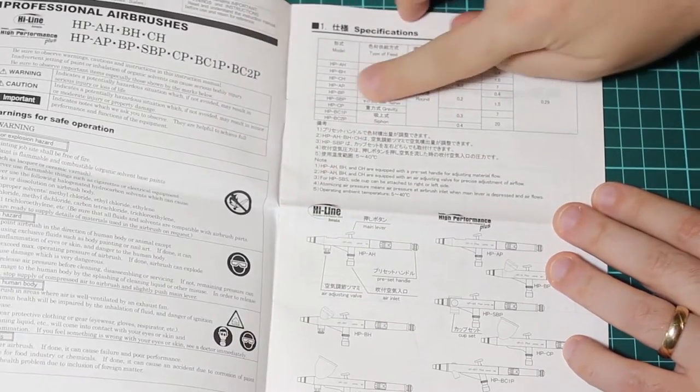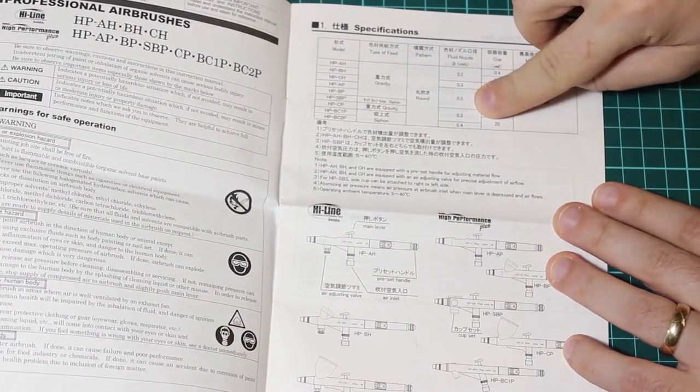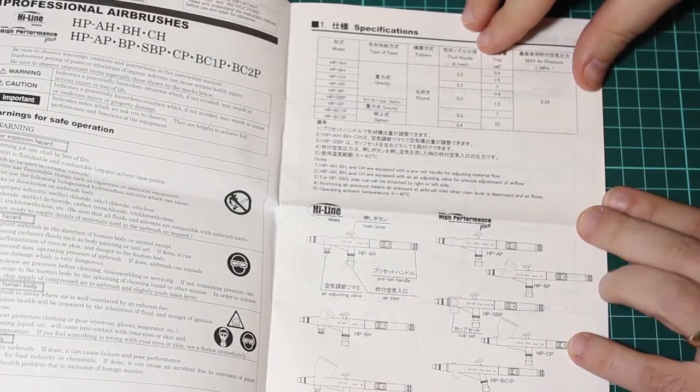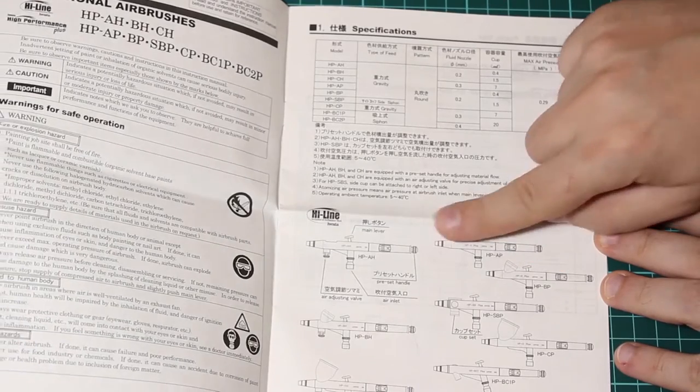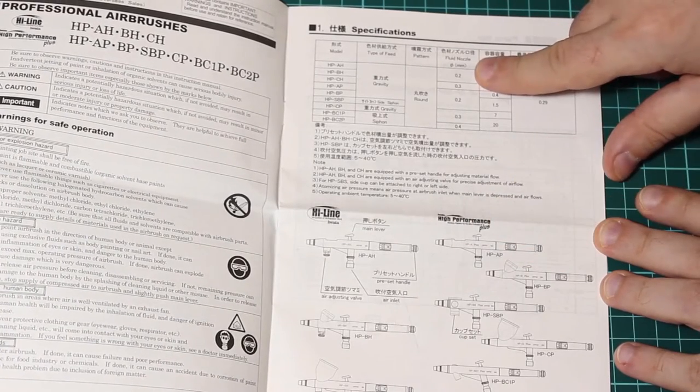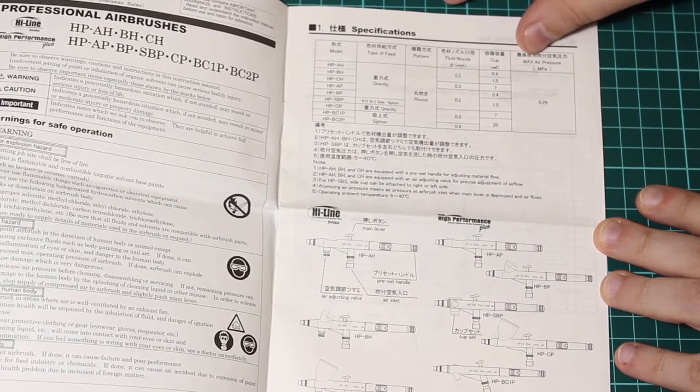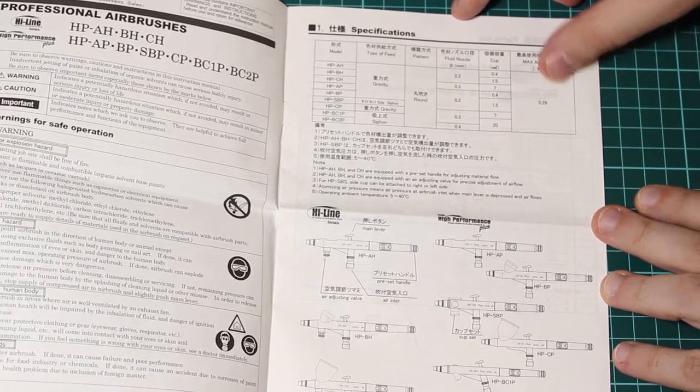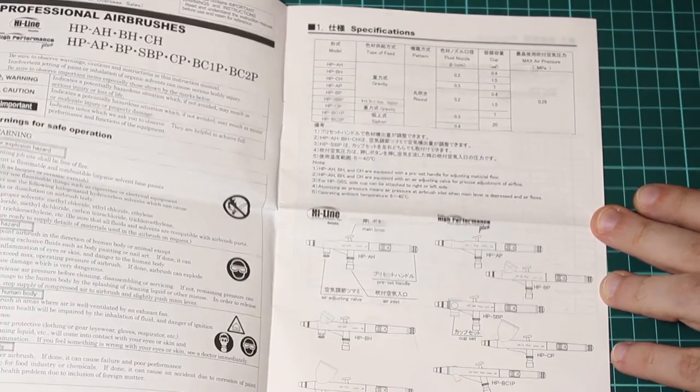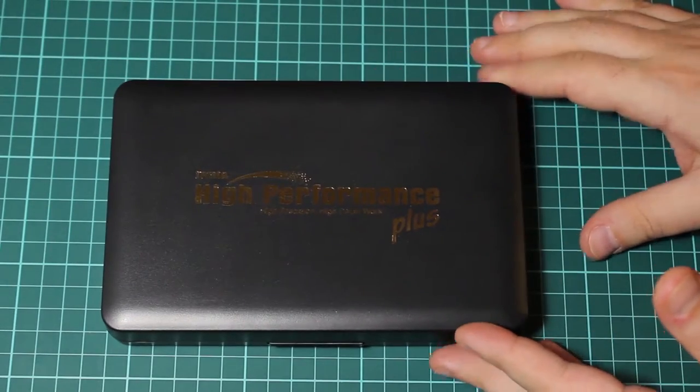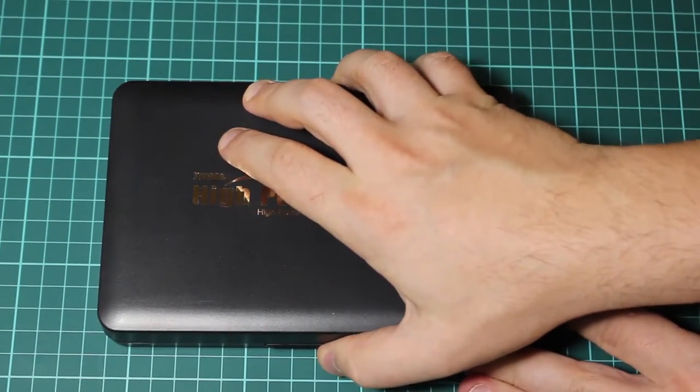As you can see the airbrush of our attention today is 0.3 needle. There are options with 0.2 and 0.4. They are all different in terms of their cup. There are side feed, smaller cups and bottom feed options. They come from 0.2 to 0.4 needle nozzle combo and they are interchangeable.